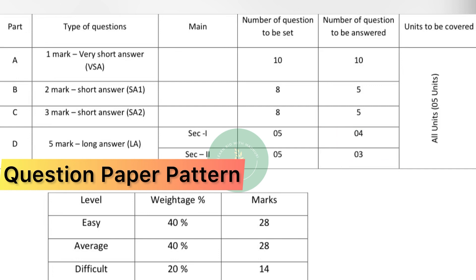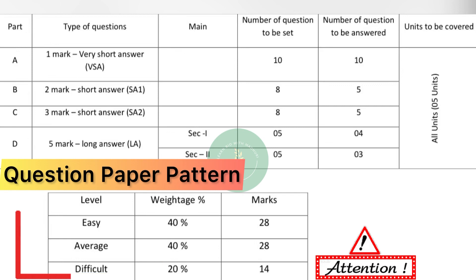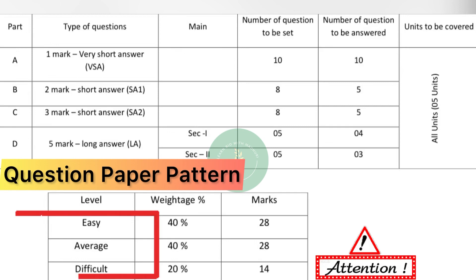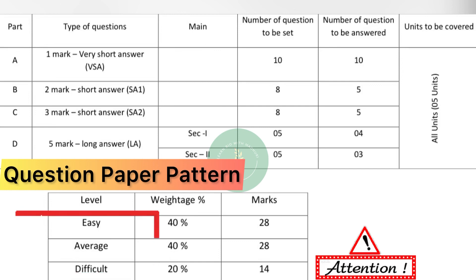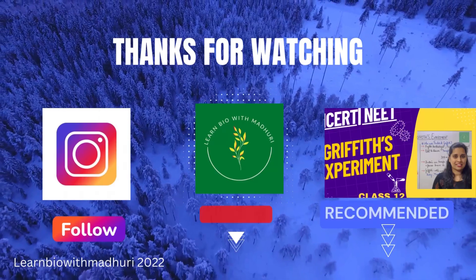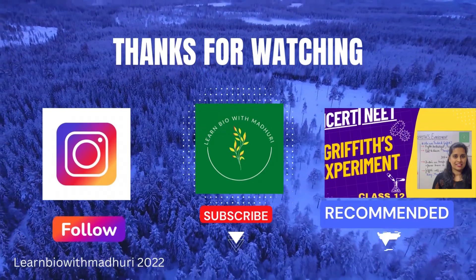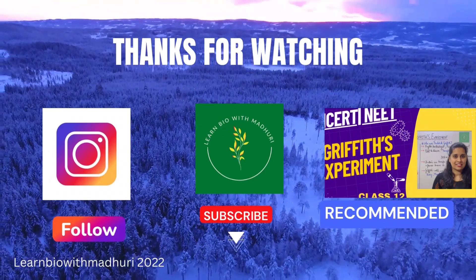The questions will be asked according to the weightage of the chapter, so all units will be covered. Regarding weightage to level of difficulty: easy questions will have a weightage of 40% and marks allotted will be 28. Average questions will also be 40% with marks allotted being 28. Difficult questions are always given less — weightage is 20% and marks allotted will be 14. I hope this session was useful. Prepare well and score well. All the best, my dear students, for the coming exams. Do not forget to like, share, comment and subscribe. See you.